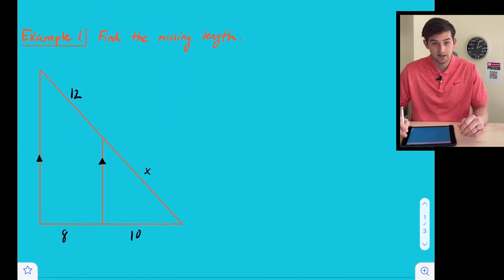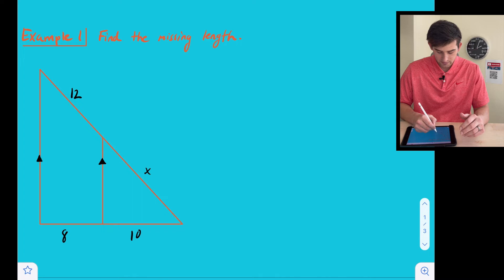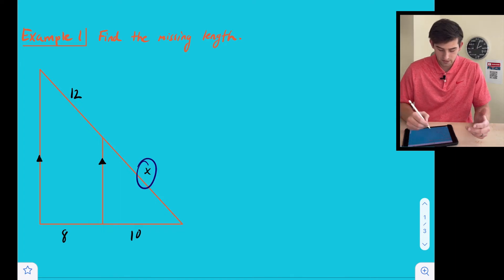All right, first example says just find the missing length. So our missing length is right here and now we can set up our proportion. So we could say 12 over X is equal to 8 over 10.